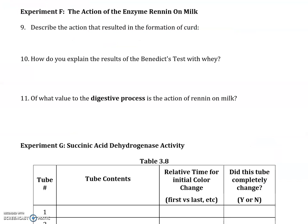Moving on to experiment F: the action of the enzyme rennin on milk. Note this rennin is spelled with three N's total, distinct from the renin in the renin-angiotensin-aldosterone system, which has one N in the middle. This rennin is an enzyme found in the gastric juice of young animals. If you've seen baby spit-up, the milk comes out chunky because rennin acts quickly to curdle the milk, making it somewhat easier to digest since protein is generally hard to digest.